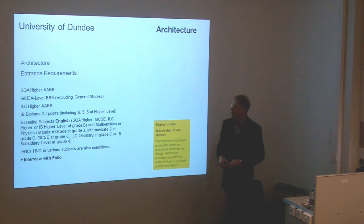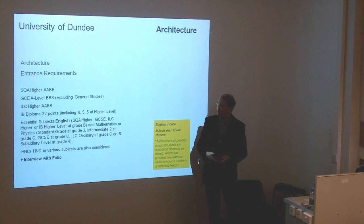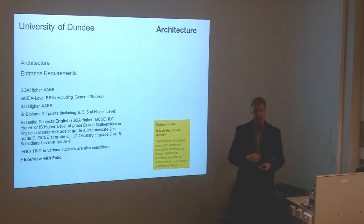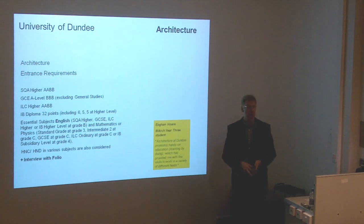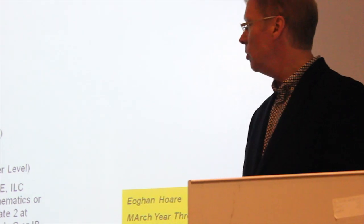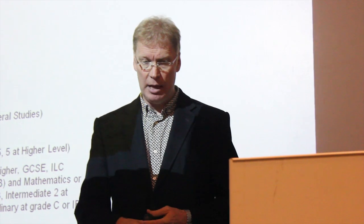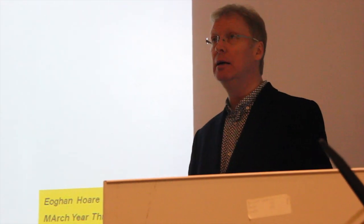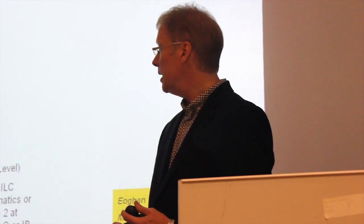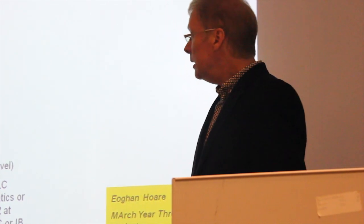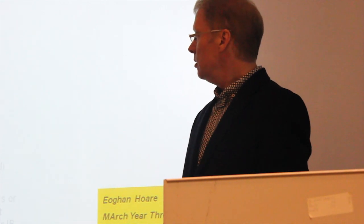People coming along to events like today will have already researched this. If you're doing Scottish Highers, it's a minimum of two A's and two B's that we look for. If you're doing GCE A-levels it's three B passes as a minimum. Anyone doing the International Baccalaureate, 32 points. There are a whole raft of other qualifications from other parts of the world that we also accept. The only subject we insist on is English — at Higher level we're looking for a minimum B pass; at GCSE it's again a B pass. HNCs and HNDs we also consider. The interview with the folio — I'll talk a little bit more about that in a moment.